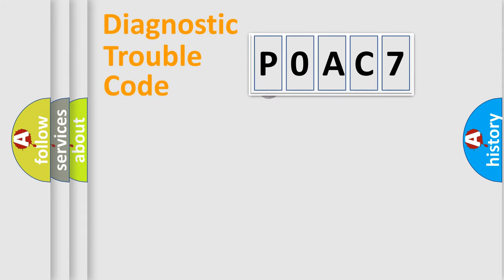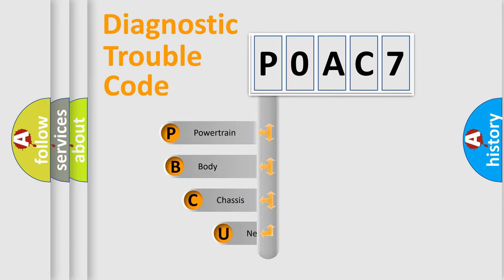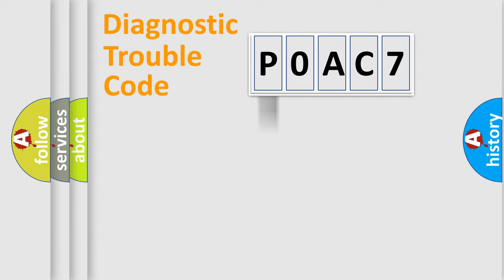First, let's look at the history of diagnostic fault code composition according to the OBD2 protocol, which is unified for all automakers since 2000. We divide the electric system of an automobile into four basic units: Powertrain, Body, Chassis, and Network. This distribution is defined in the first character of the code.